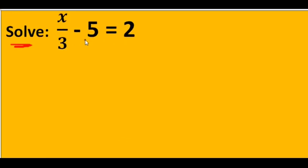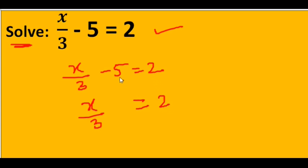Now we will discuss x over 3 minus 5 equals 2. First, we have to send minus 5 to the other side. So when I send minus 5 to the other side, keeping 2 as it is, it becomes plus 5. 2 plus 5 equals 7.